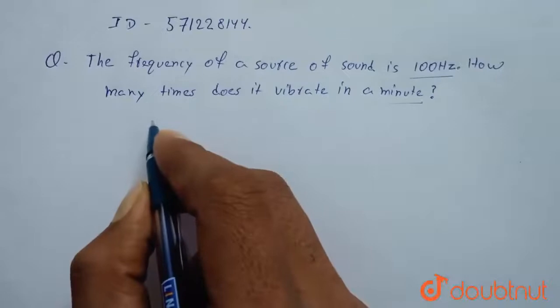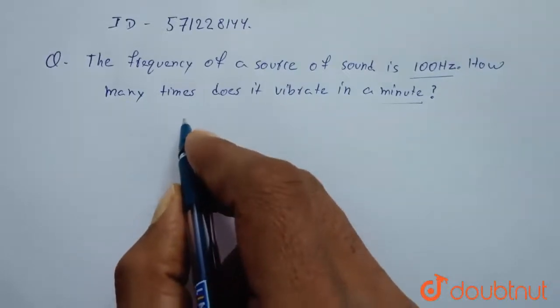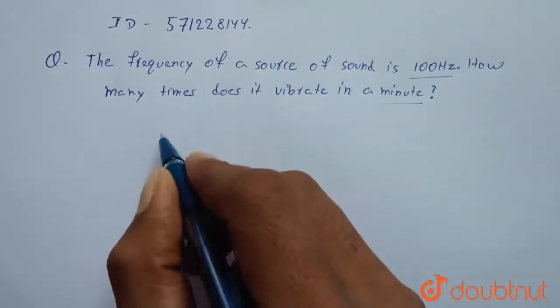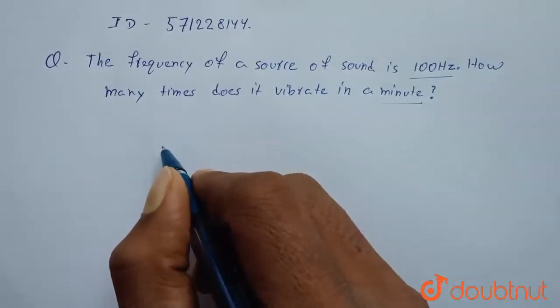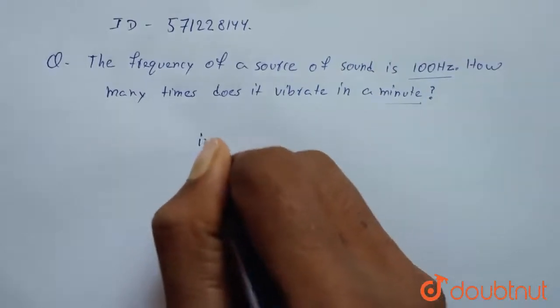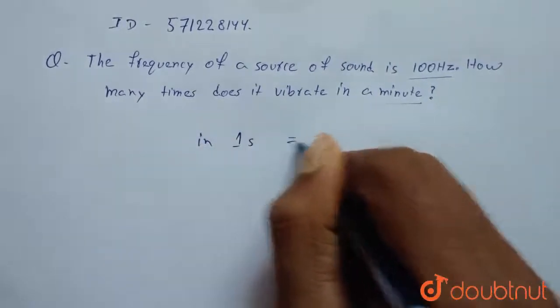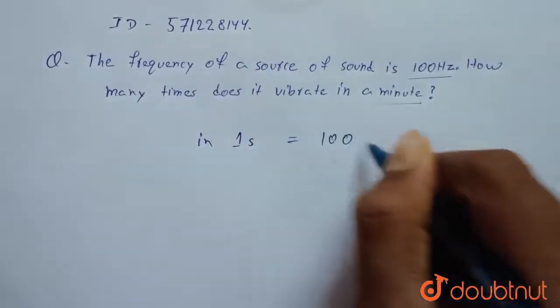So what does frequency mean? Frequency is the number of vibrations in one second. So in one second there are 100 vibrations.